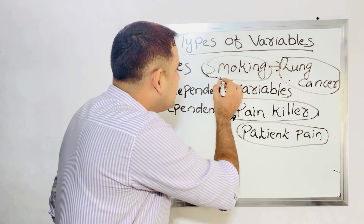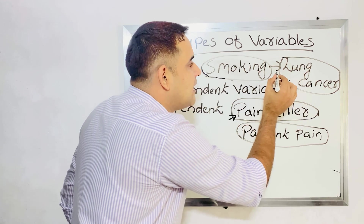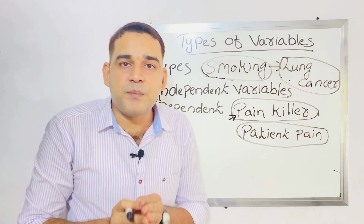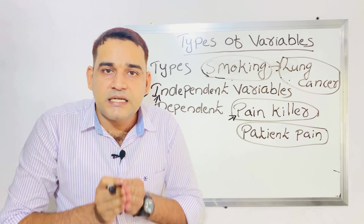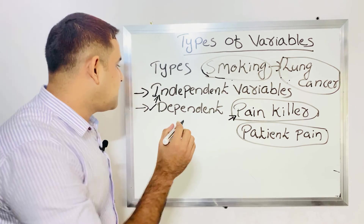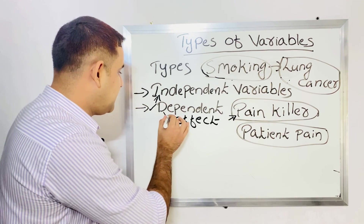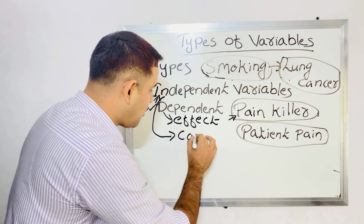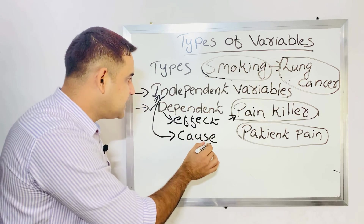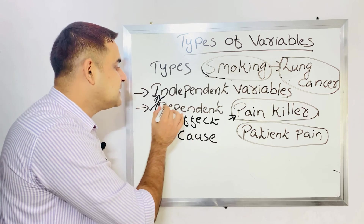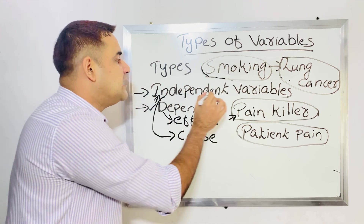Smoking is the independent variable, and due to the effect of smoking, lung cancer is the result — so lung cancer patients are the dependent variable. Patients with pain getting relief from the pain are also the dependent variable. Always keep it in mind: dependent variable is the effect, and independent variable is the cause. Cause of smoking — the effect is lung cancer. Cause is independent variable; effect is dependent variable. The dependent variable is always the result of the effect of the independent variable.